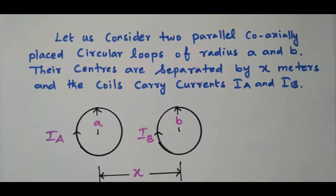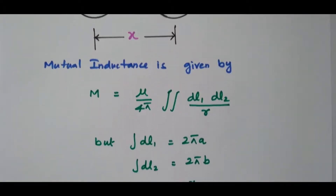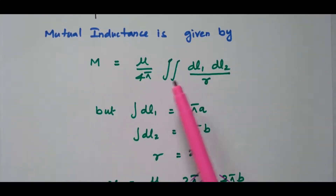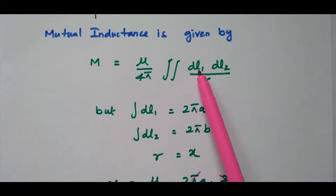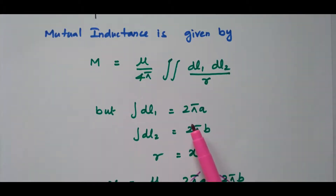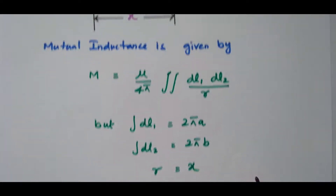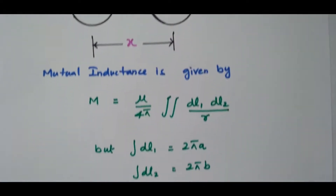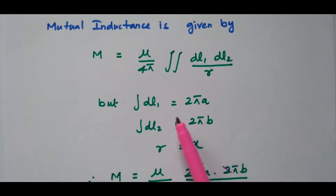Due to these two different current loops, we find the mutual inductance between them. Mutual inductance M equals μ divided by 4π, double integral of DL1·DL2 divided by R. This is the formula for mutual inductance. The double integral contains integral DL1 and integral DL2. Integral DL1 is the length L1, which is the circumference 2πa of the first circular current loop. So DL1 equals 2πa.